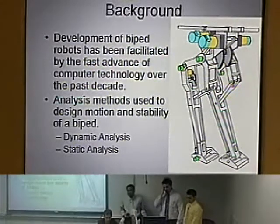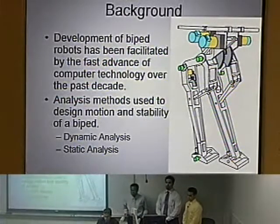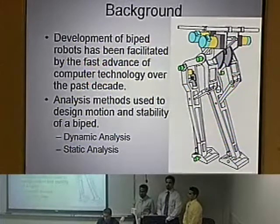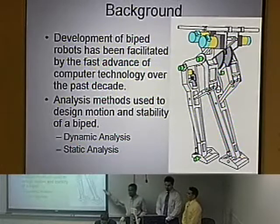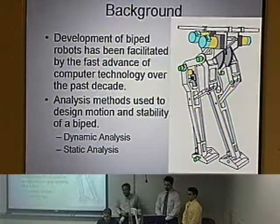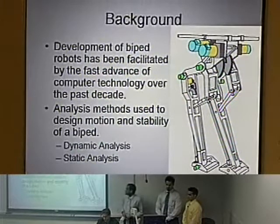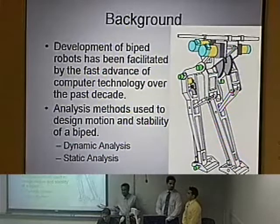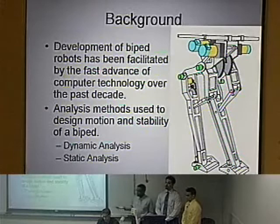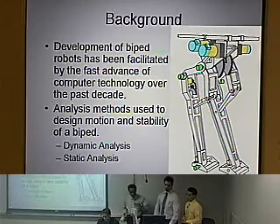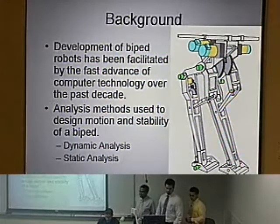Recently, with the use of computers, the field of robotics has advanced in its construction and modeling. For example, the robot shown here was built in the late eighties. Its primary achievement was that it was able to move forward and back — it wasn't able to turn or even jump. Focus is mostly on dynamic and static analysis.